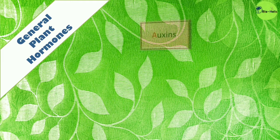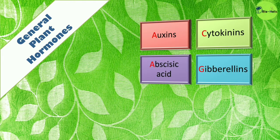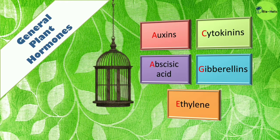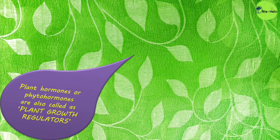There are five main plant hormones: auxins, cytokinins, abscisic acid, gibberellins, and ethylene. To easily recall these names, use the image of a cage as a mnemonic — A for auxins, C for cytokinins, A for abscisic acid, G for gibberellins, and E for ethylene. This mnemonic will help you recall the five important plant hormones.